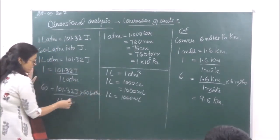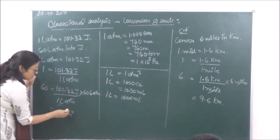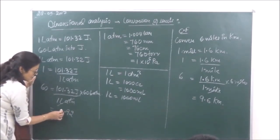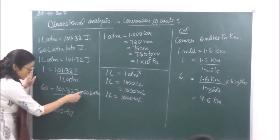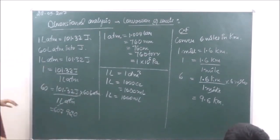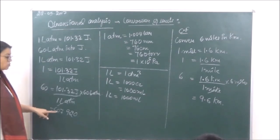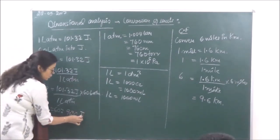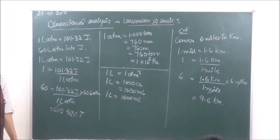After multiplying, 60 liter-atmosphere equals 6079.20 joules. So this is your conversion factor method. The conversion factor must be known to perform the conversion.